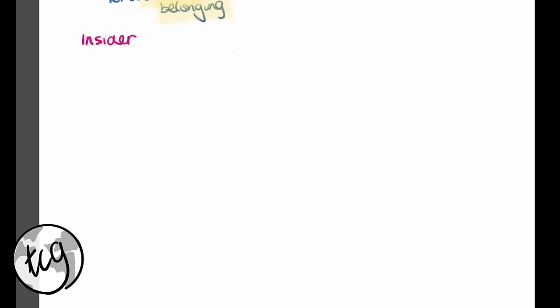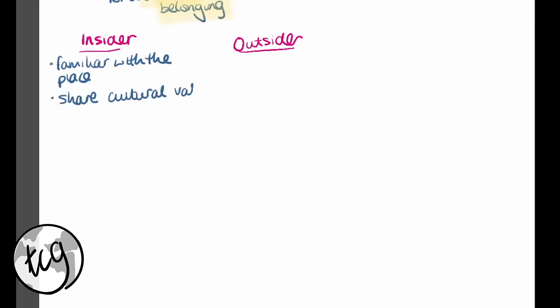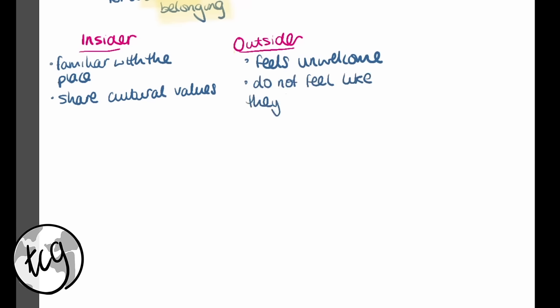Now we're going to look at insiders and outsiders perspectives on place. An insider is someone who feels familiar with a place — they may live there or share cultural values such as the same religion or language. An outsider is someone who feels unwelcome in a place and does not feel like they belong there, which links back to the idea of sense of belonging. Importantly, outsiders don't necessarily have to live outside the place; they may live there but have negative experiences or not share values with people who live there.